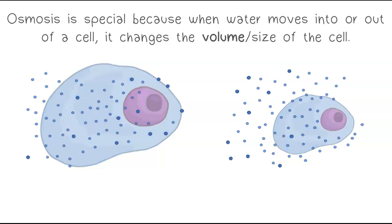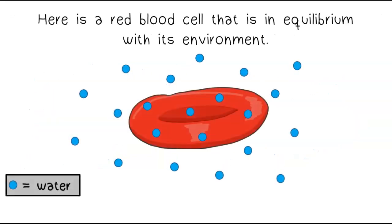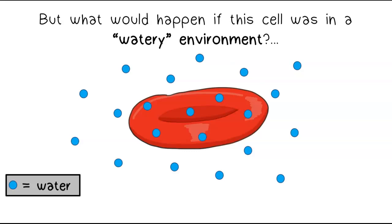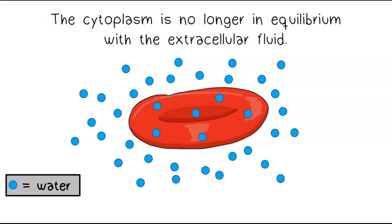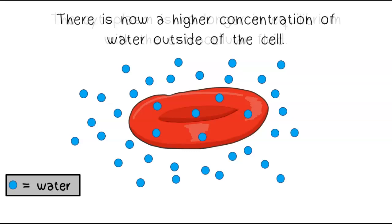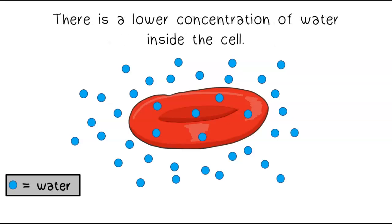Let's look at an example. Here is a red blood cell that is in equilibrium with its environment. But what would happen if this cell was in a watery environment? The cytoplasm is no longer in equilibrium with the extracellular fluid. There is now a higher concentration of water outside of the cell. There is a lower concentration of water inside the cell.